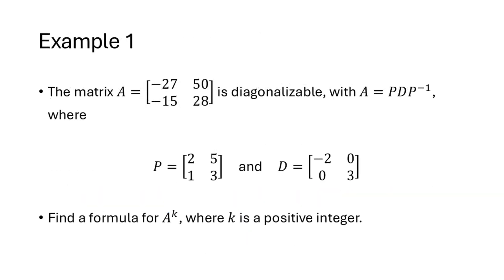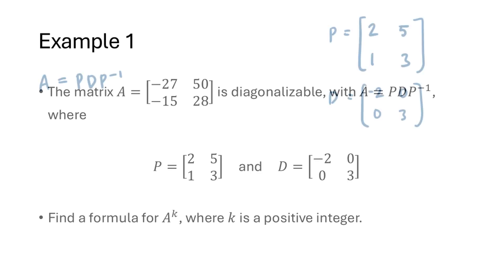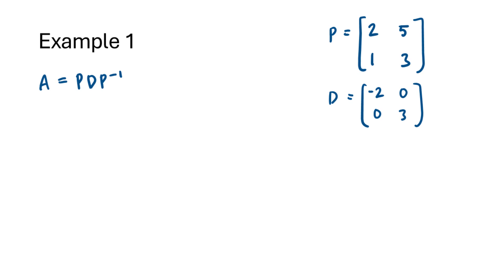Let's try an example. The 2x2 matrix with entries -27, 50, -15, 28 is diagonalizable, with A equaling P D P inverse, where P and D are the given matrices — P is invertible and D is diagonal. To find A to the K we need P inverse, which we weren't given, so let's compute it using the formula for the inverse of a 2x2 matrix. Plugging in the entries of P, we get P inverse is the matrix 3, -5, -1, 2.